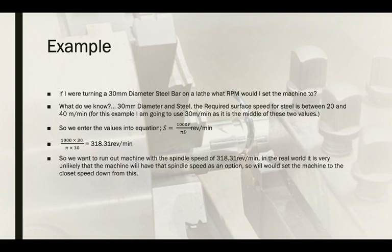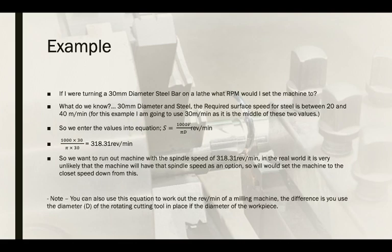We want to run our machine at a spindle speed of 318.31 RPM, but in the real world it is very unlikely that the machine will have that exact spindle speed as an option, so we would set the machine to the closest speed down from this. You can also use this equation to work out the RPM for a milling machine — the difference is you use the diameter of the rotating cutter in place of the diameter of the workpiece, since it is the cutter that is spinning.